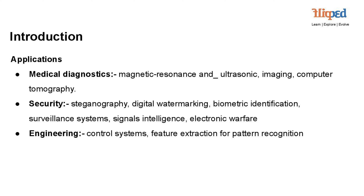Signals intelligence and electronic warfare: Signal processing is employed in military and intelligence applications for signal interception, analysis, and countermeasures. Engineering — Control systems: Signal processing techniques are used to design and implement control algorithms in applications such as robotics, industrial automation, and aerospace systems. Feature extraction for pattern recognition: Signal processing extracts relevant features from data to identify patterns and classify objects in fields like image recognition, speech processing, and natural language processing.